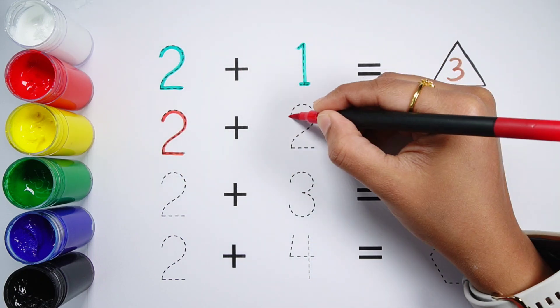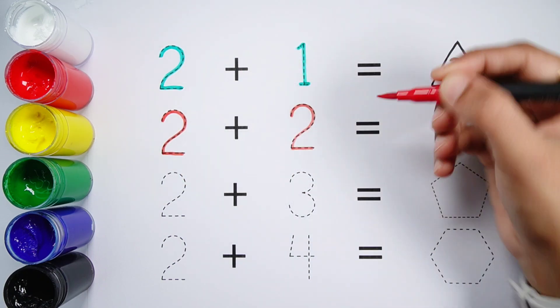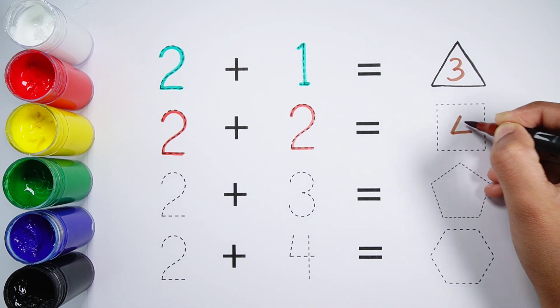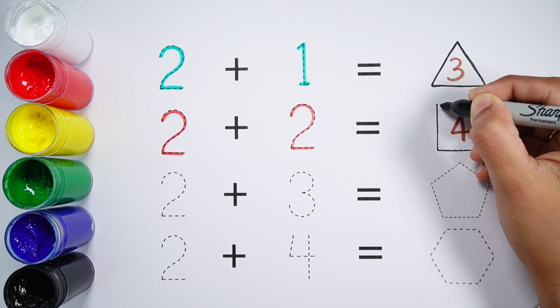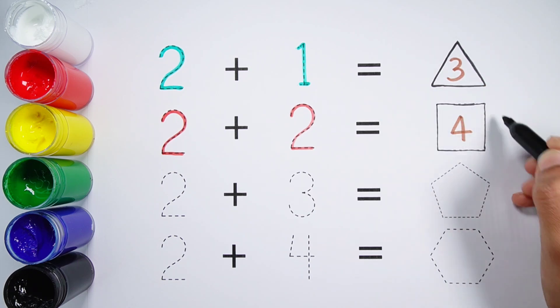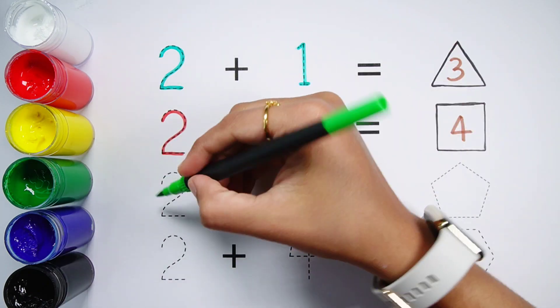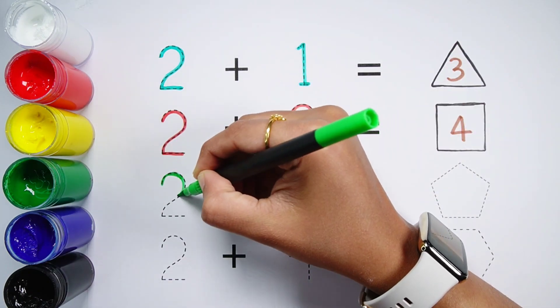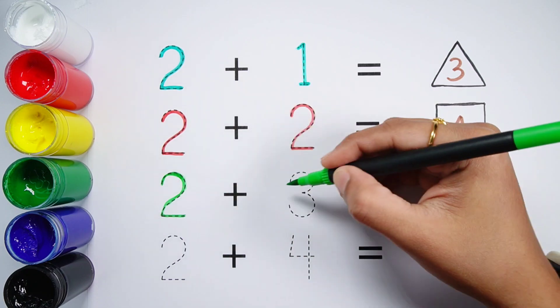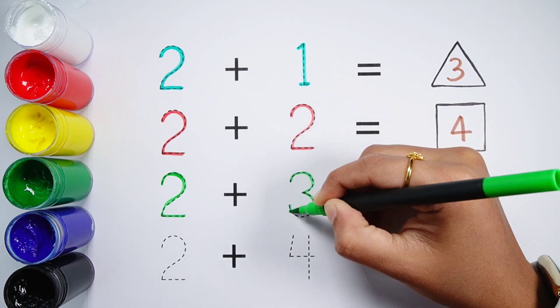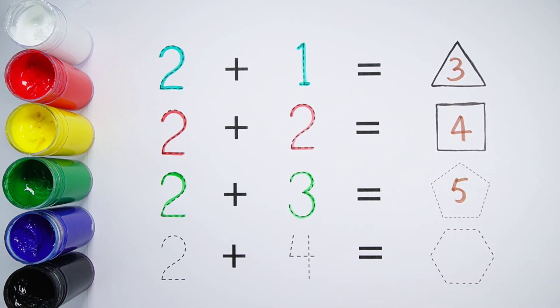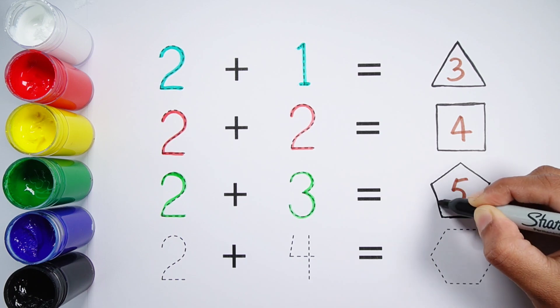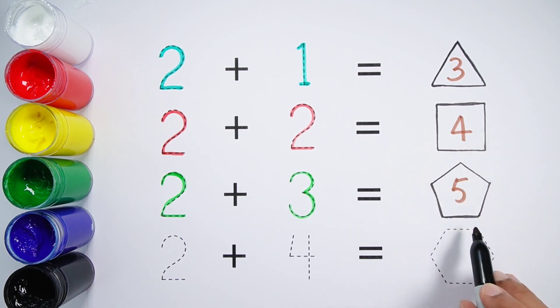2 plus 2 equals 4. A four-sided square. 2 plus 3 equals 5. A 5-sided pentagon.